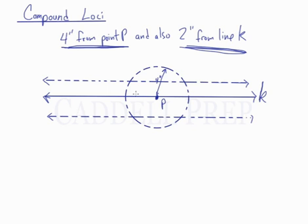So, now we have this circle which represents 4 inches from point P, and these two lines which represent 2 inches from line K. We're looking for the points that are both 4 inches from point P and also 2 inches from line K.